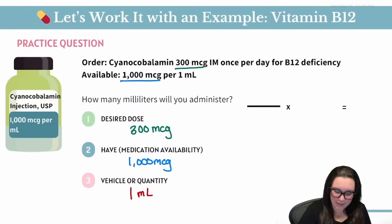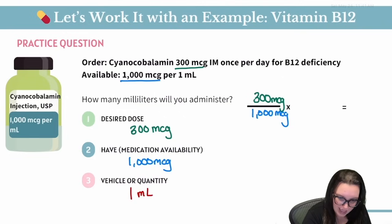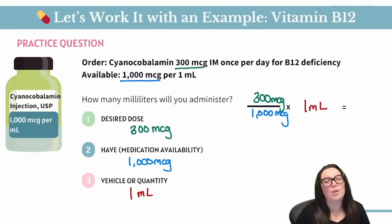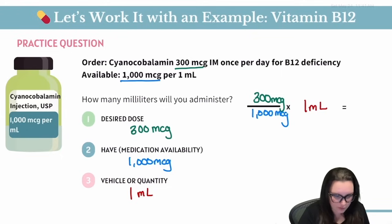Now we're just going to plug in our numbers. We're going to put our 300 micrograms on top — that's our desired dose. 1,000 micrograms on the bottom — that's what we have. And our 1 mL in our vehicle or quantity spot. We have 300 divided by 1,000 multiplied by 1, giving us the correct answer of 0.3 mLs.